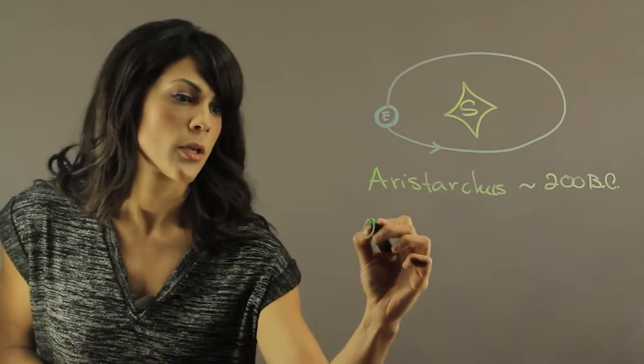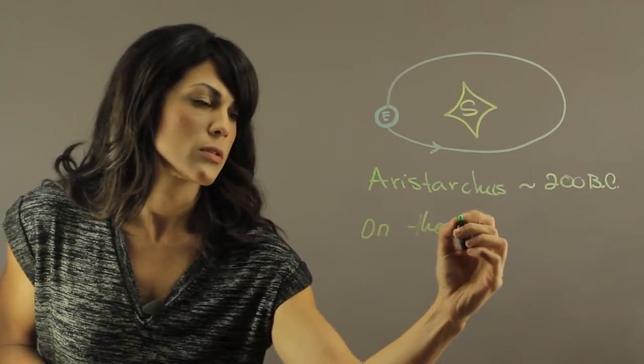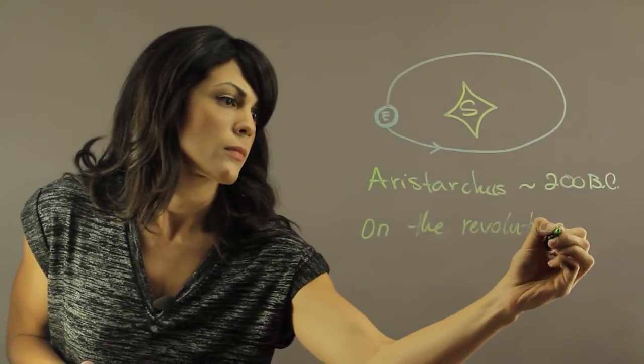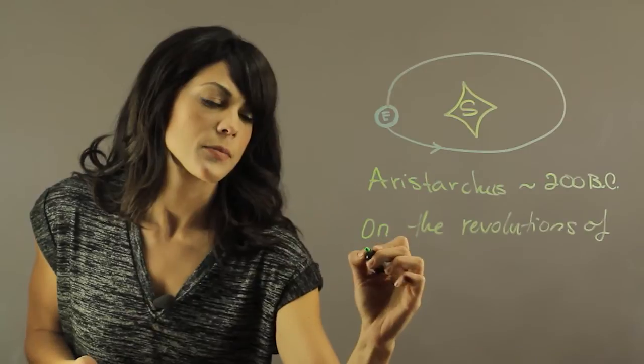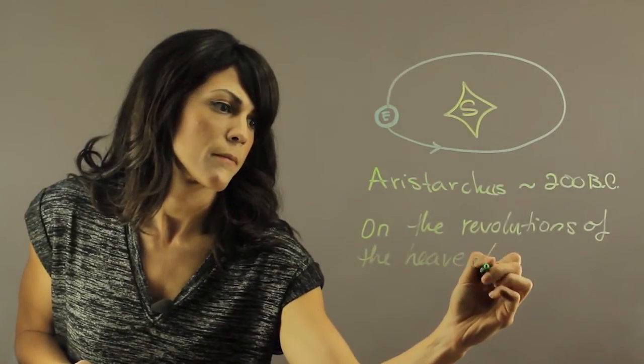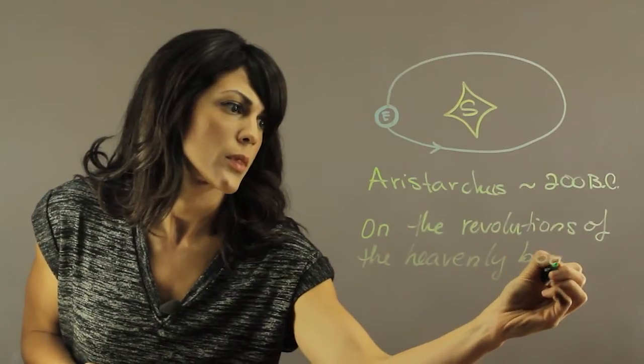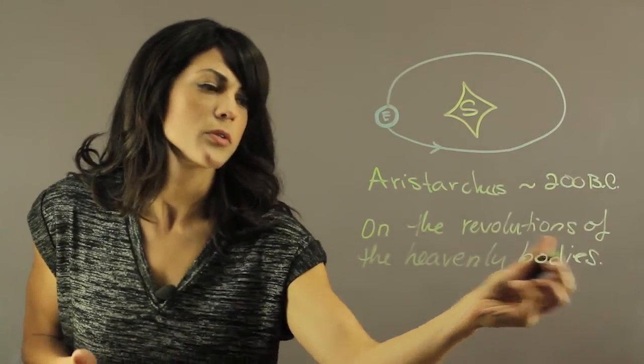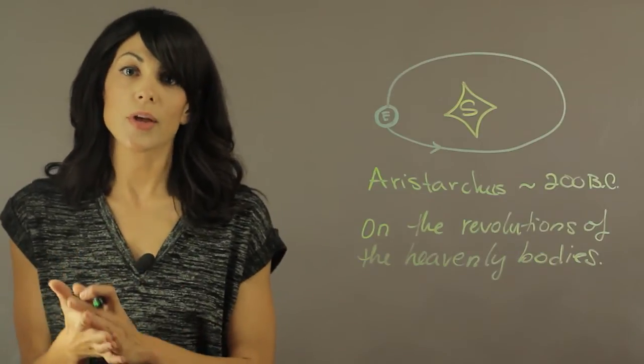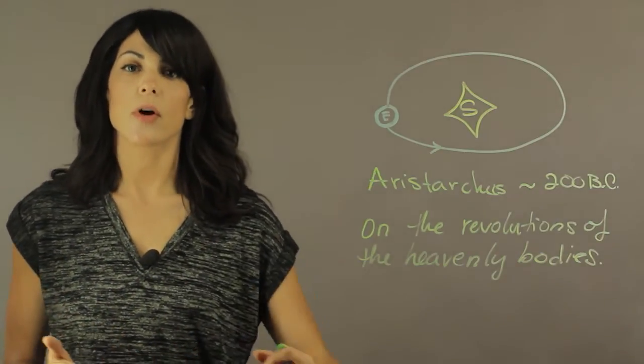This book is called On the Revolutions of the Heavenly Bodies. He was the one that demonstrated through astronomical observation that the Earth and the other planets move around the Sun.